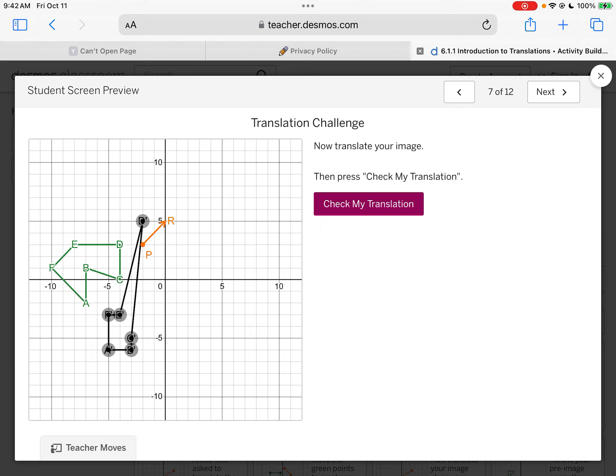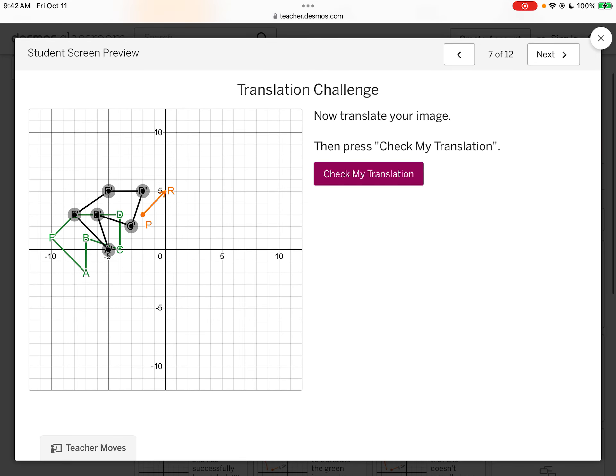E needs to go up 2, over 2. So E needs to end up right here. F, up 2, over 2. So F needs to end up right there. A, up 2, over 2. So A needs to be here. B, up 2, over 2. B needs to be right there. And C, up 2, over 2. C needs to be right there.